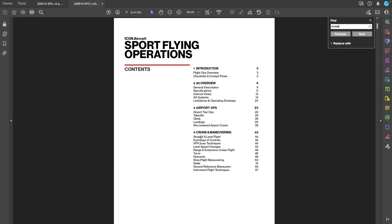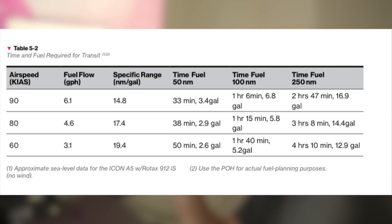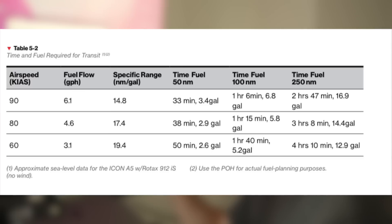Looking at the ICON Sport flying operations guide: if you fly at 60 knots, that gives you a much lower fuel flow but really increases time in flight. What you're trying to find is that perfect blend between time and fuel efficiency — that magic number is really 80 knots. We had a tailwind flying west to east, and that still gives you a very low fuel flow of about 4.6 gallons per hour. For a 250 nautical mile flight, 80 knots gives you three hours and eight minutes.